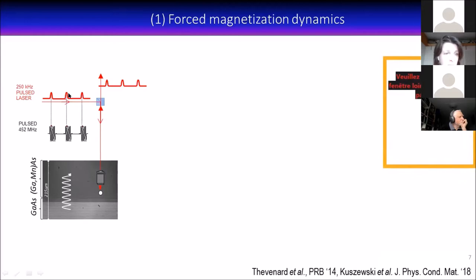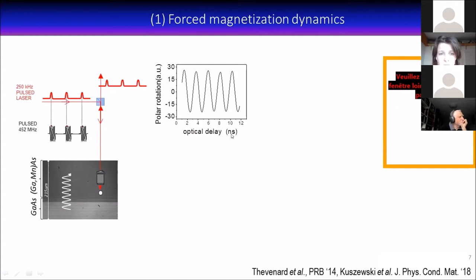What we do is monitor how the polarization of this light has rotated after reflection off the sample. We then delay the arrival time of these laser pulses and we get something like this: polarization rotation versus optical delay. This is 12 nanoseconds, and you see a very nice oscillating signal that oscillates at the same frequency as the exciting electrical voltage. We know this polarization rotation, through magneto-optical effect, contains information on the magnetization dynamics. What you're seeing is the magnetization precessing under the effect of the acoustic wave.